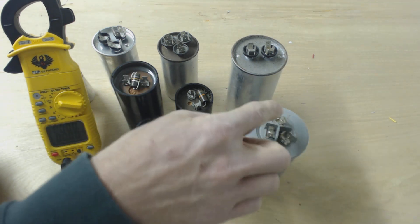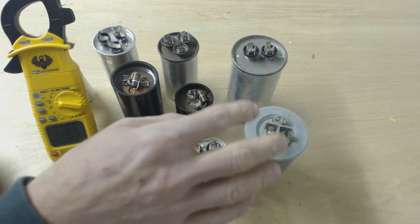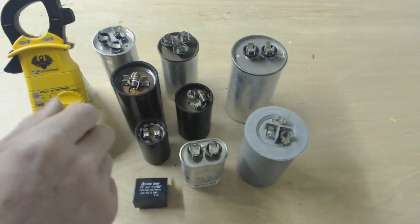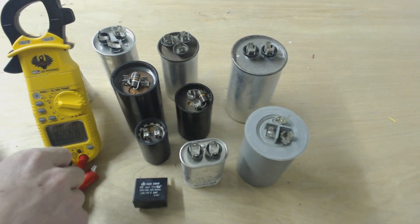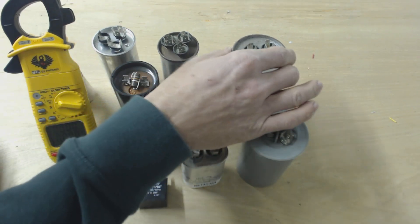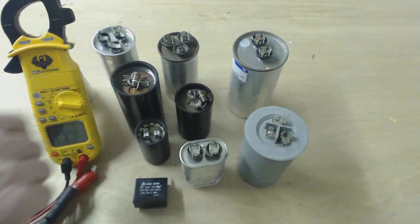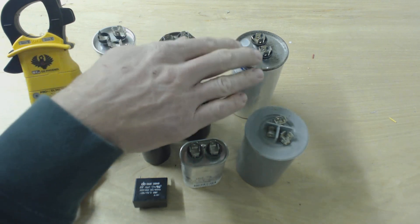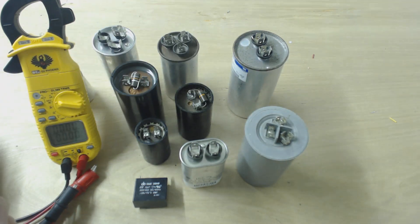These dual capacitors that have three sets of terminals are normally for outdoor units like heat pumps and outdoor condensers. A real large one with a high MFD rating might be used for a compressor, specifically just for a compressor without another additional motor.